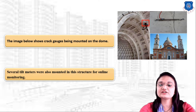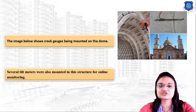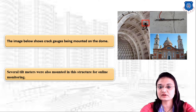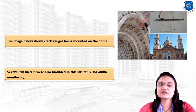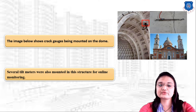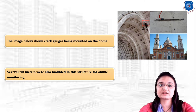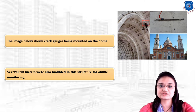Many tilt meters are also mounted in this structure to get online monitoring. For online monitoring of crack development in the structure, we can use a satellite tilt meter to get online monitoring data. With the help of this information, we can easily measure crack development in any building, dome, or structure.